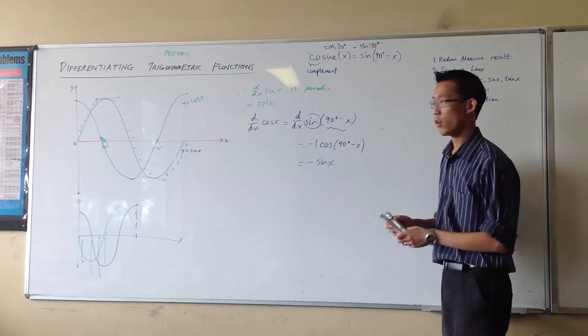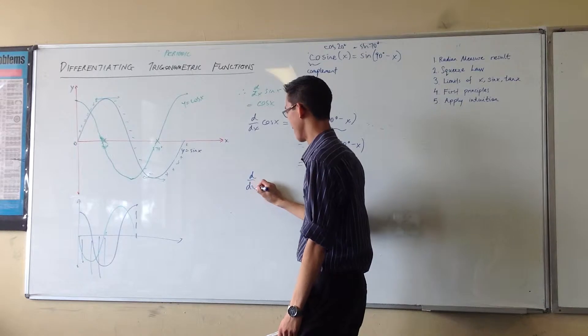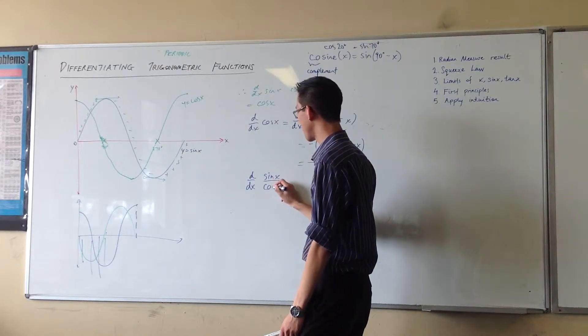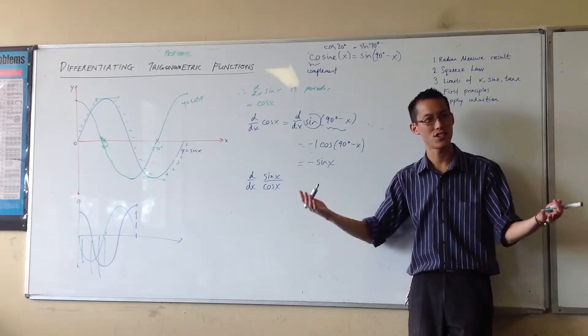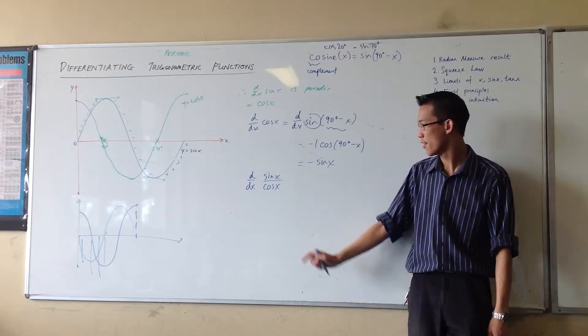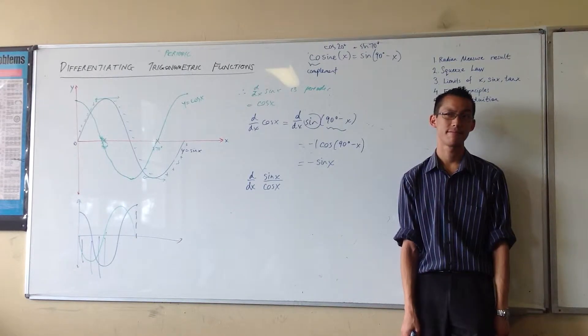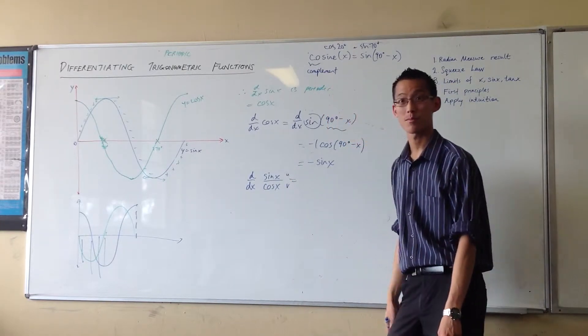Alright, one more. We did sine, we did cos, so next we should do tan. Now I'm going to do this and make it a little more obvious for you. Tan is just an identity for this ratio, sine over cosine. So what rule should we use? Quotient rule. So there's my u, there's my v.